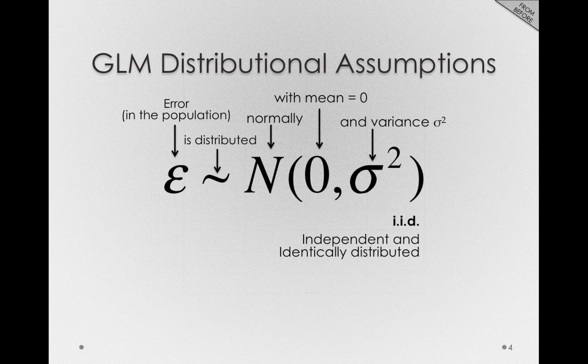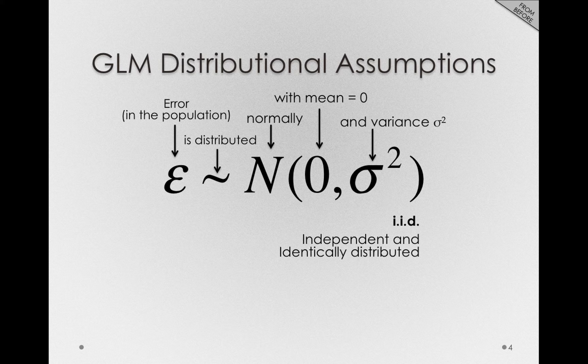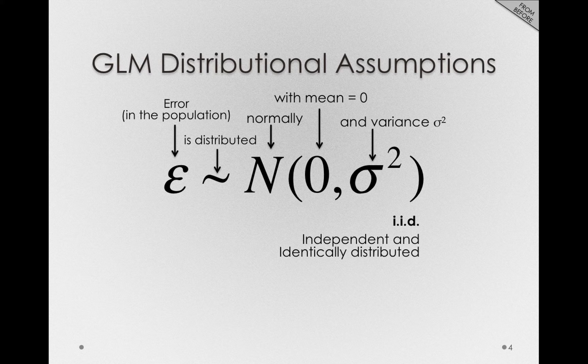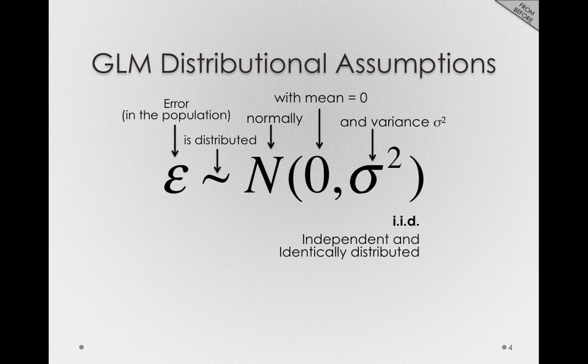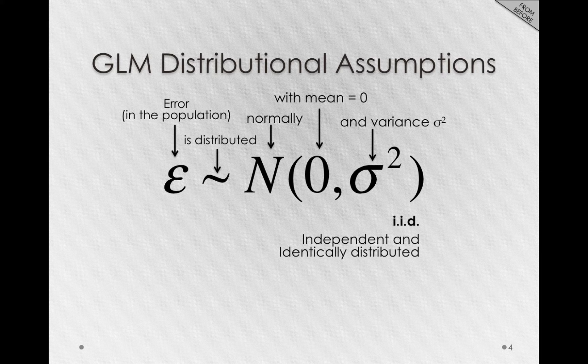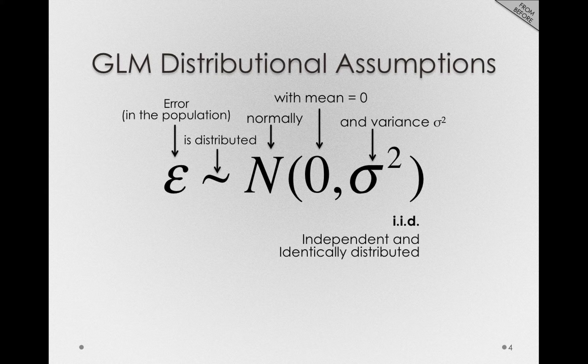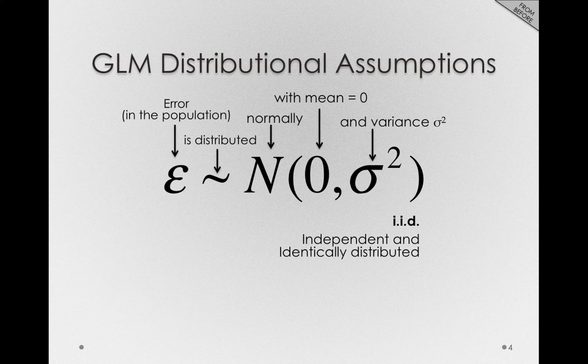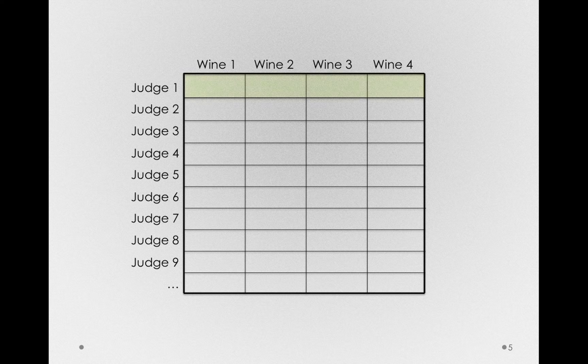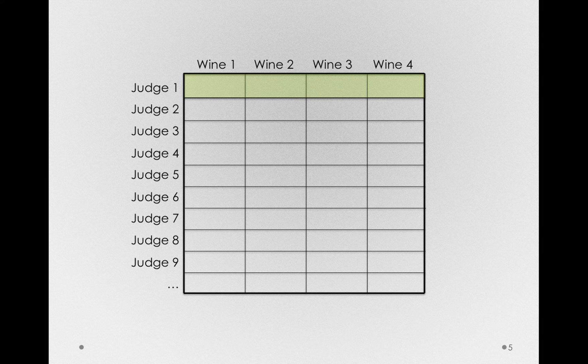Now, recall our general linear model assumptions. We say that our error is normally distributed with a mean of zero and a variance of sigma squared, and the observations are IID. That is, they are independent and identically distributed. Now, independence here is a pretty important statement. It is saying that one error or one observation is not dependent on another. That is, it doesn't tell us any information about another observation in our data set. But if we have a judge make multiple ratings, let's say judge one here, those observations can't be independent. They're coming from the same person.